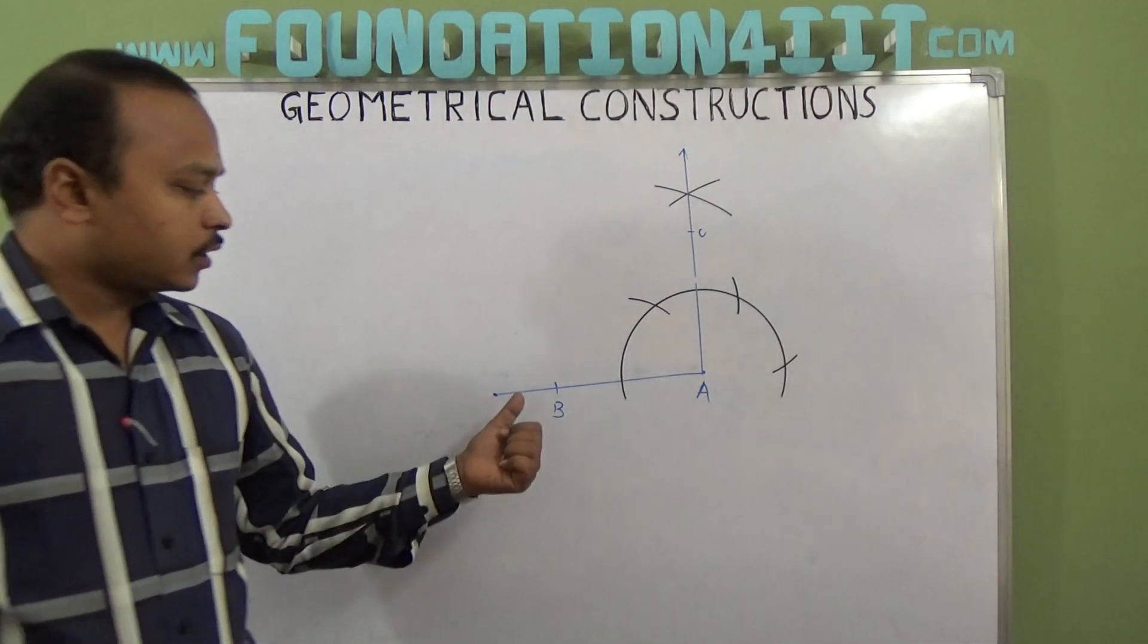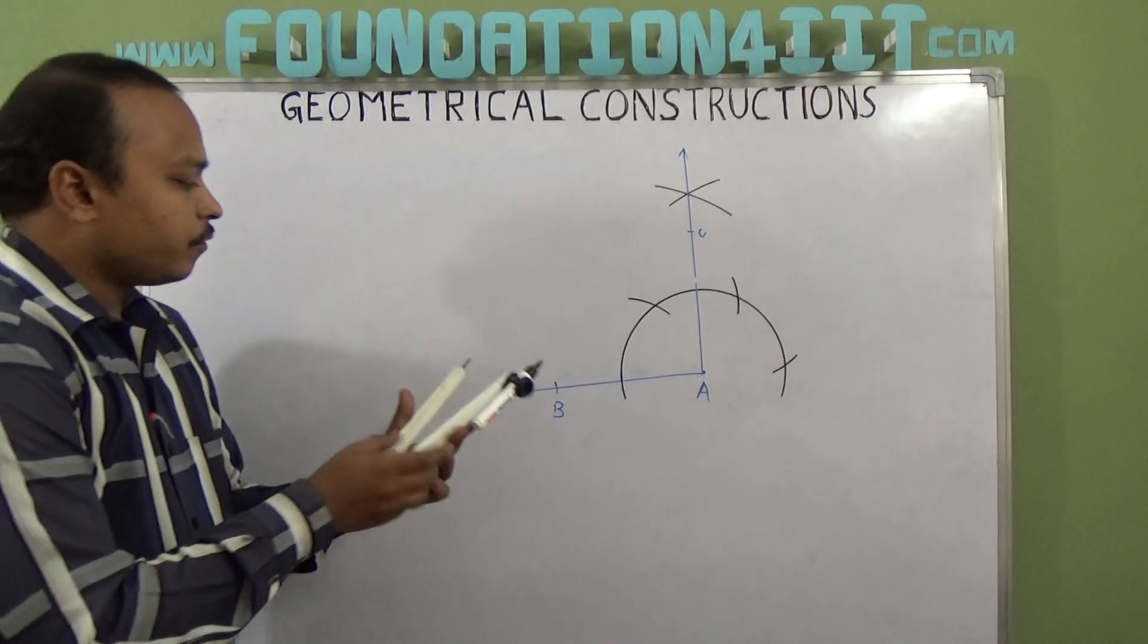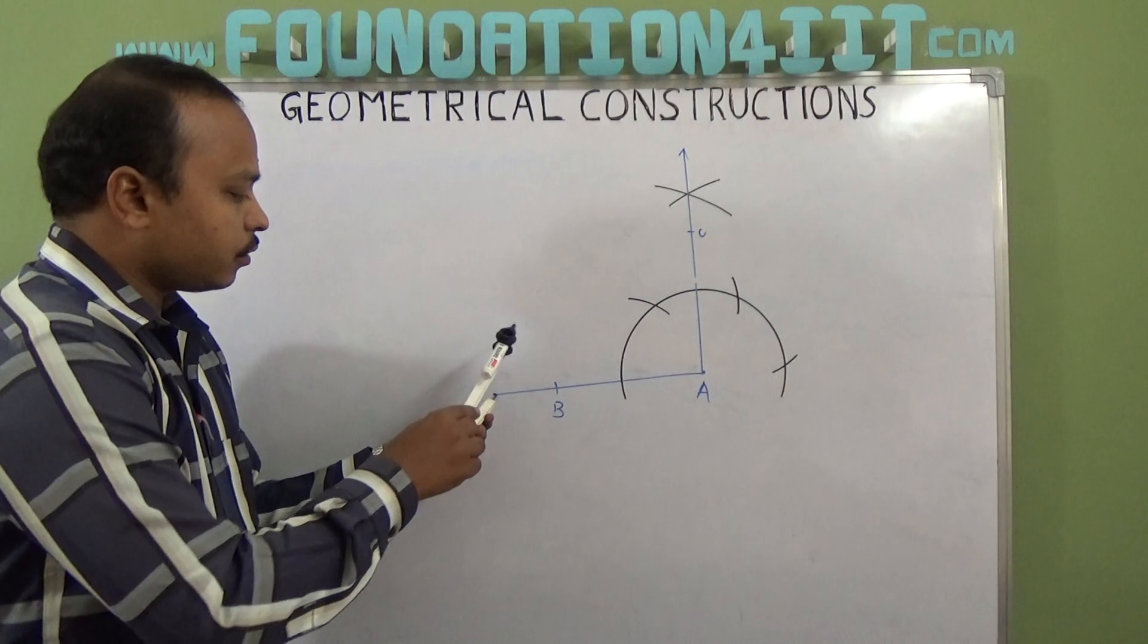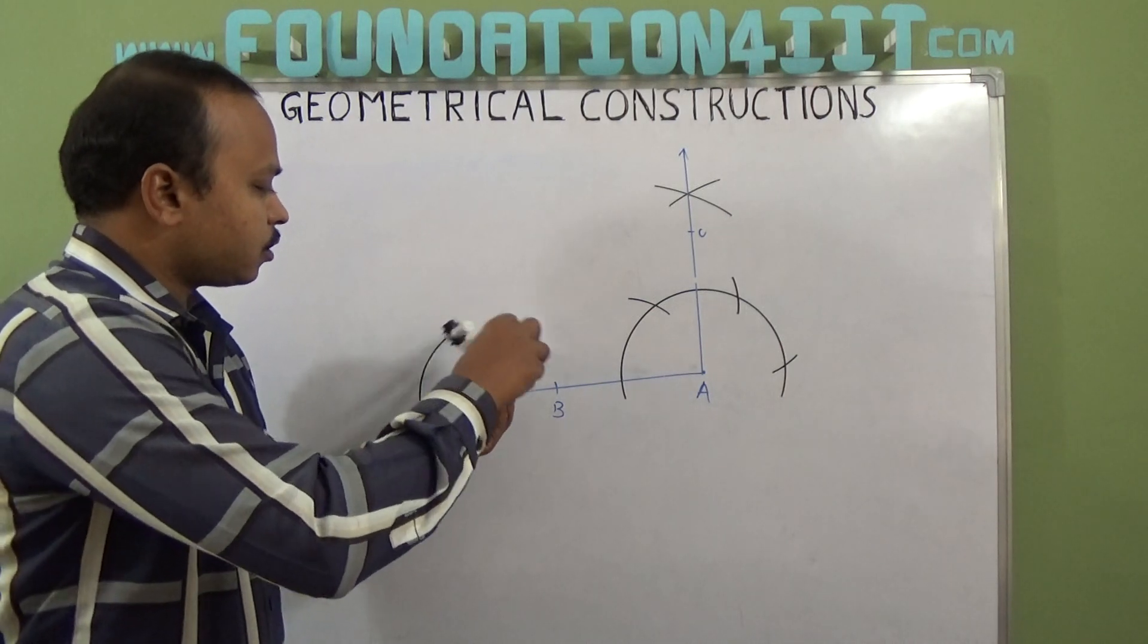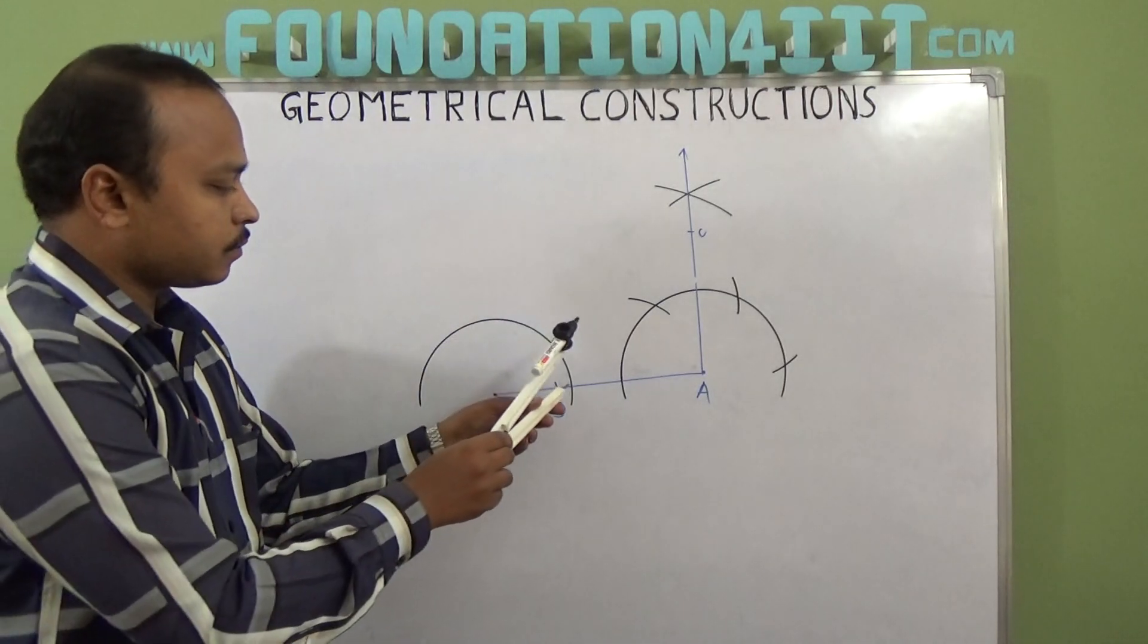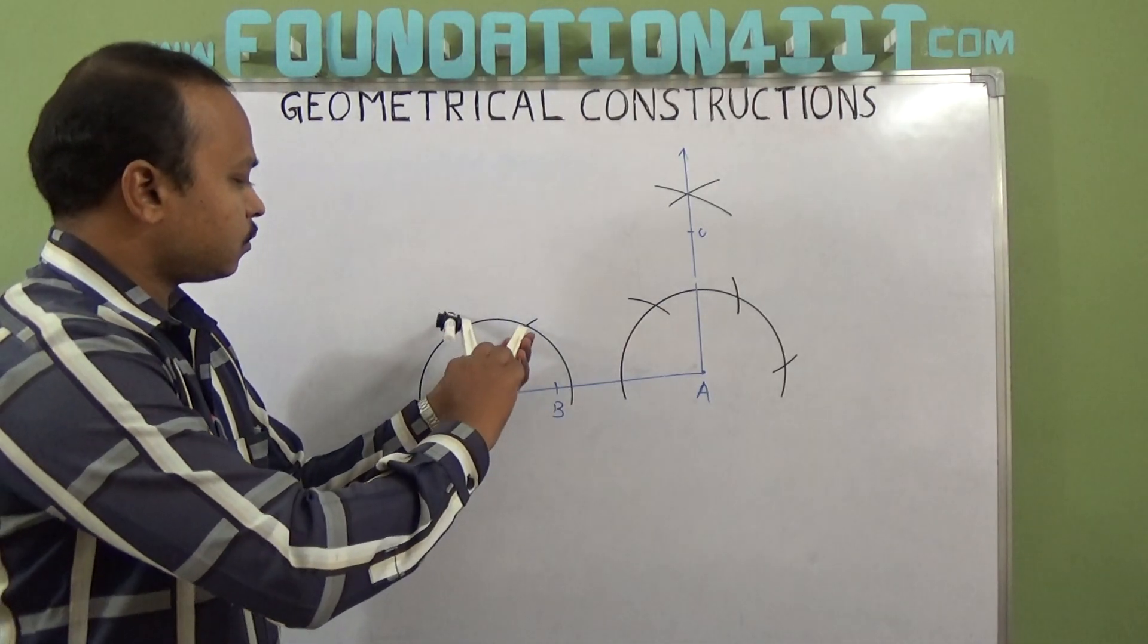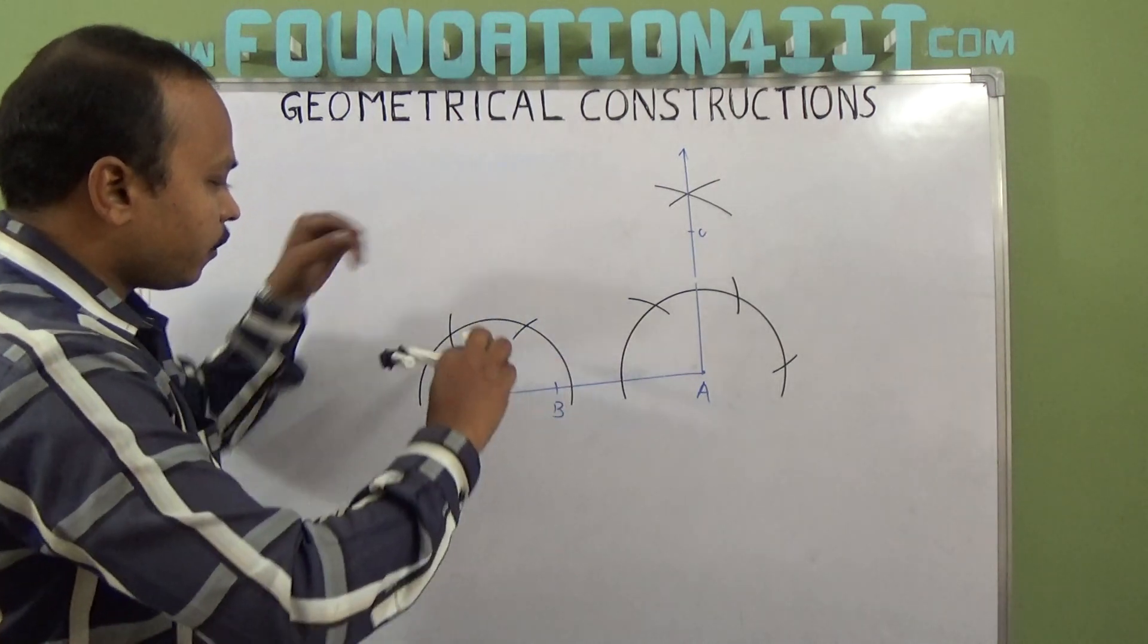I will show you one more. For example I want to construct 90 degrees this side also. From the center point, just draw an arc with same radius. You cut the two arcs, and from here one more.